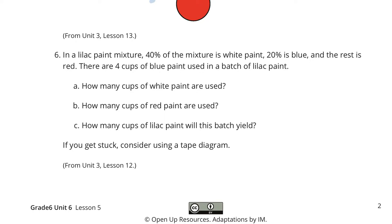Let's write down what we know. We know 40% equals white. We know 20% equals blue. And the rest is red. Well, 40 plus 20 is 60, which means the rest of red is 40%. Now, what else do we know? We know that four cups of blue are used.